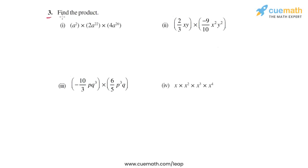In question 3, we have to find the product in each of the 4 parts. So let's start with the first part. In the first part, we have to find a² × 2a²² × 4a²⁶. We will multiply the coefficients separately and algebraic factors separately.